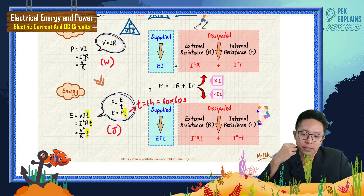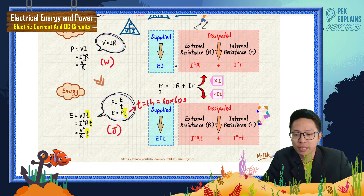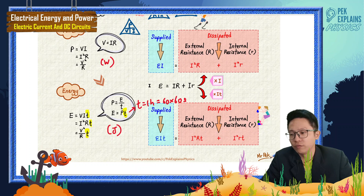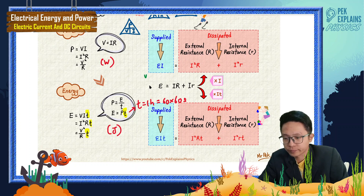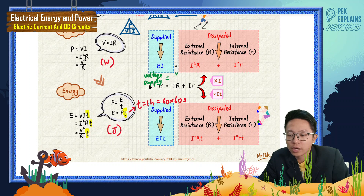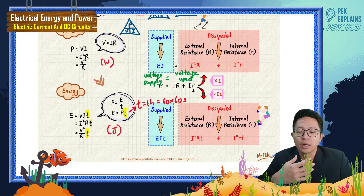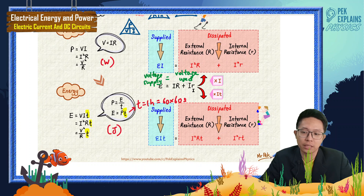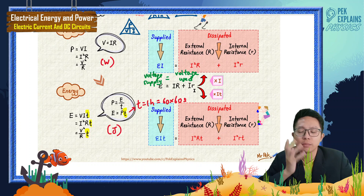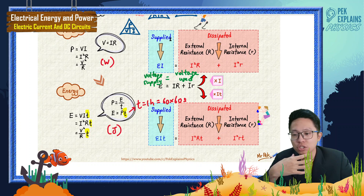Before this, you learned about EMF. EMF equals IR plus Ir. This means the voltage supplied by the battery equals the voltage used by the external resistor in the external circuit, plus the voltage used by the internal resistance inside the battery.